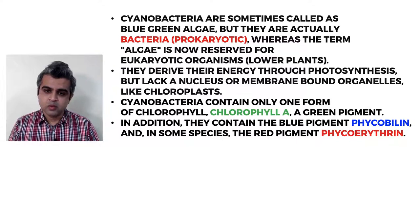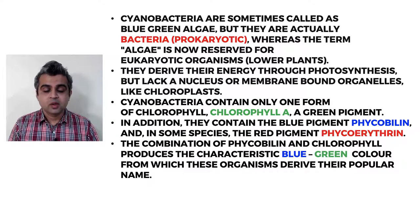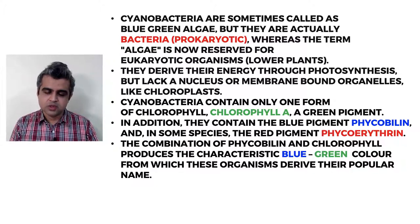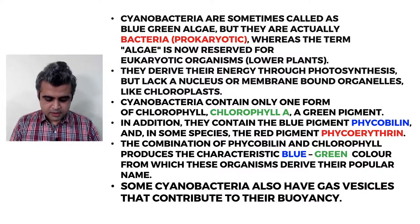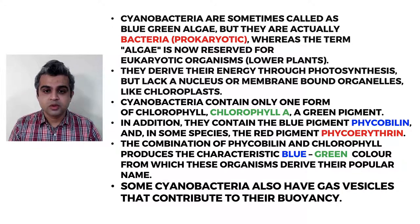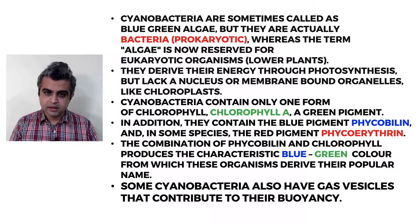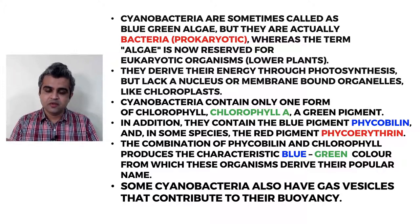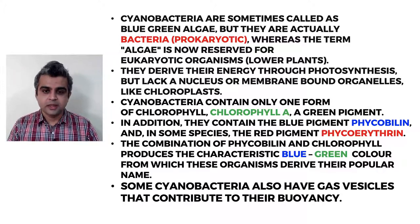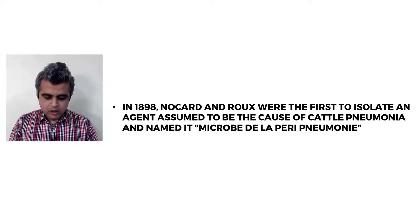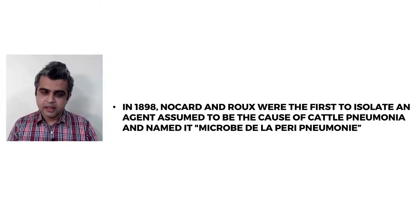In addition, cyanobacteria contain a blue pigment called phycocyanin and a red pigment called phycoerythrin. The combination of phycobilin and chlorophyll gives them their older, incorrect name 'blue-green algae'. Some cyanobacteria also have gas vesicles which contribute to their buoyancy, allowing them to float at the water's surface to get maximum sunlight.